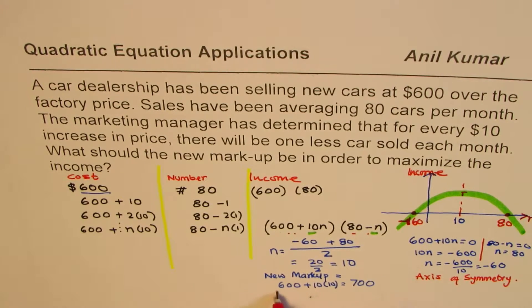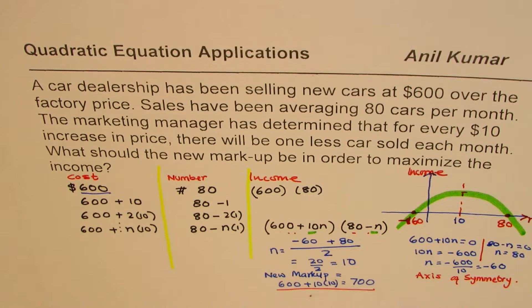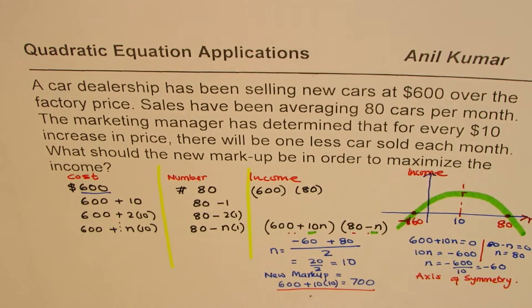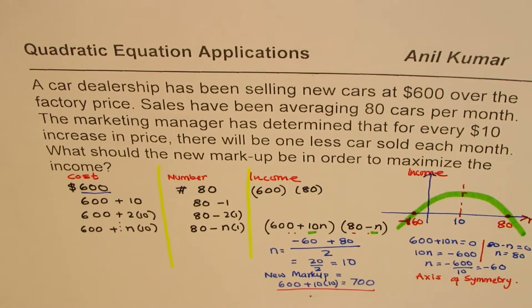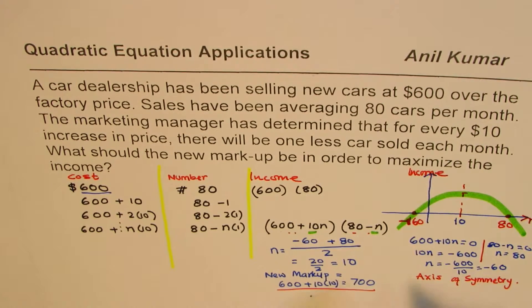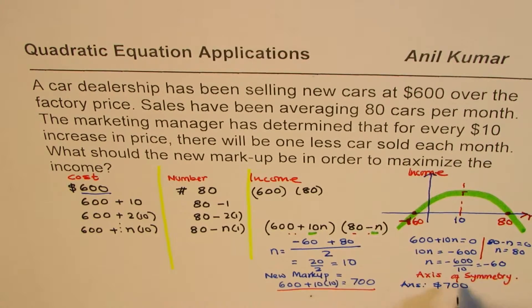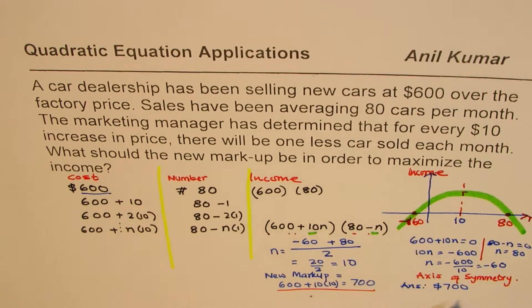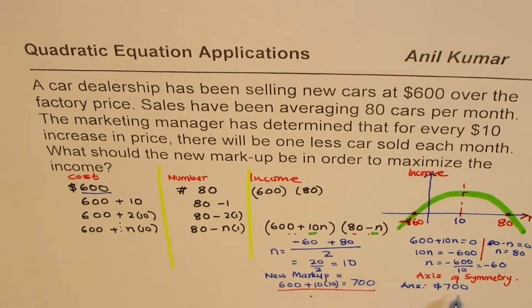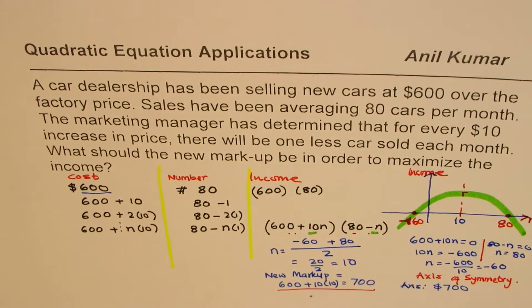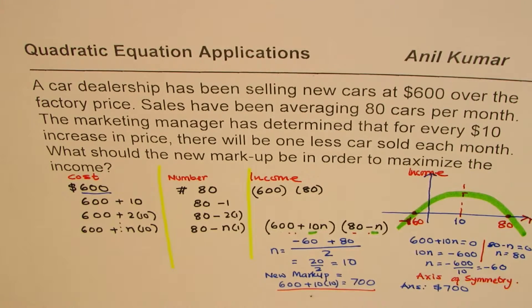Do you get an idea? So that's a neat way of solving this particular question. So that's one way of solving it. So anyway, let me write down the answer here. So answer is new markup is $700. So instead of 600, we sell it for 700. We really make maximum income.